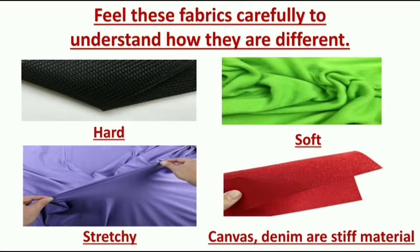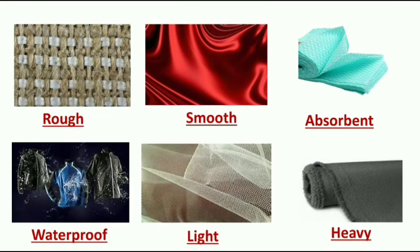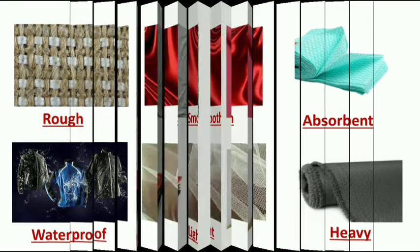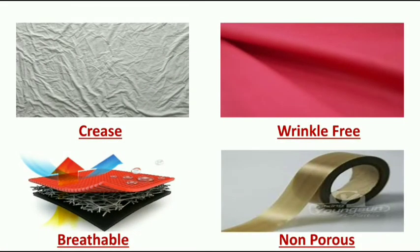Feel these fabrics carefully to understand how they are different. There are many materials of fabric that can be hard, soft, stretchy — like canvas, denim, or stiff material — as well as rough, smooth, absorbent, waterproof, light, or heavy. Fabrics can also be crease-free, wrinkle-free, breathable, or non-porous.